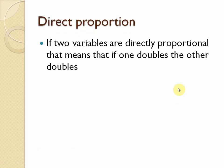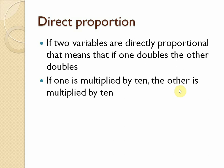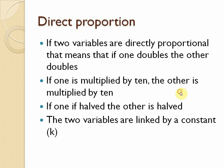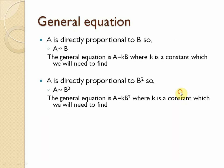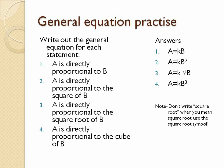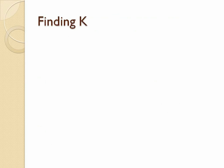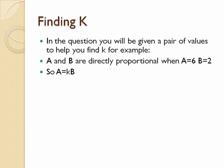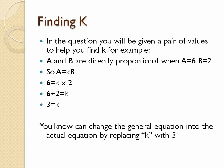Direct proportion is the connection of two variables — if one is multiplied by 10, this gives the complete overview of the previous lecture. This is the general equation. Once you have revised this, we will move further into direct proportion calculations.